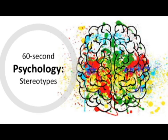Stereotypes can have a number of impacts. For example, it can impact the way we act towards someone based on the assumptions we have due to the social category we place them in, such as assuming a woman needs help fixing their car due to the stereotype that women know little about them. In this example, the stereotype might also cause a woman to underestimate their ability in mechanics. Individuals may feel pressure to conform to their stereotypes, or if they don't live up to their stereotype, it could impact their confidence.